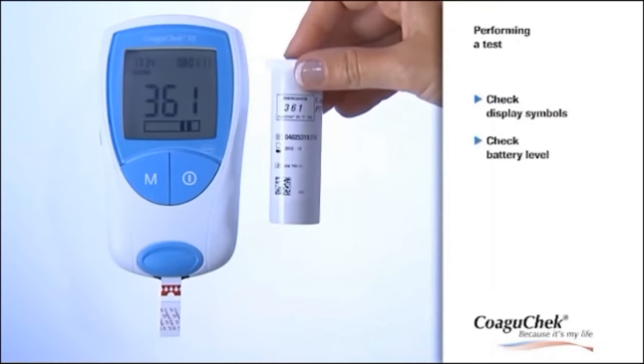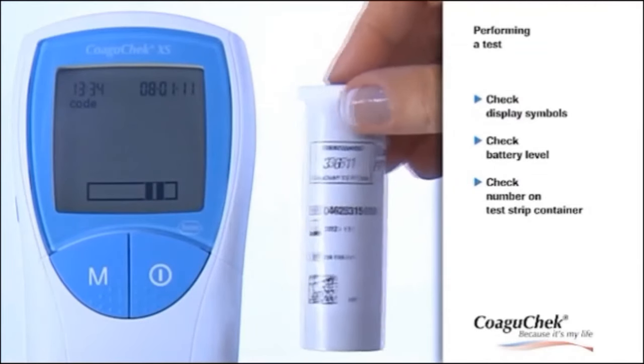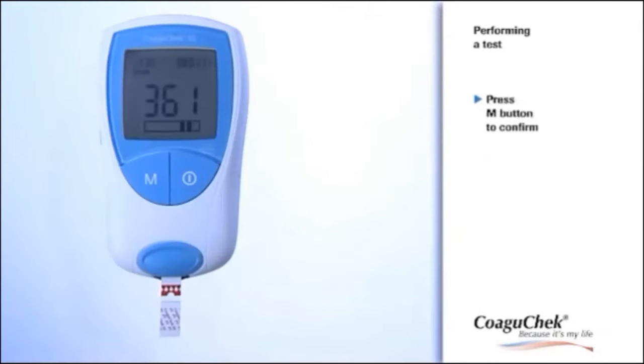The code number of the code chip inserted is displayed. Make sure that this number is identical to the code number printed on the test strip container. Please press the M button to confirm that these two numbers are identical. Using the wrong code chip can produce inaccurate results.